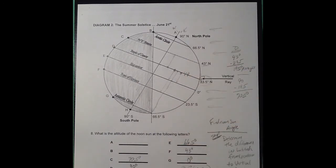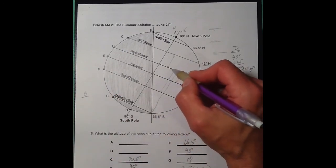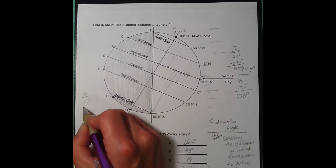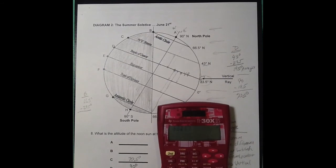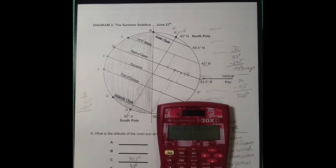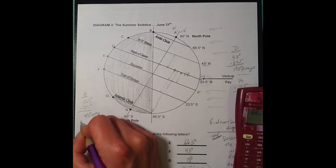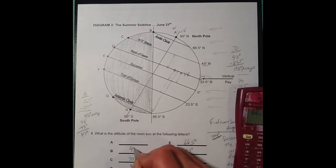The Arctic Circle is at 66.5 degrees north. For point B, which is the Arctic Circle, I'm starting at 23.5 degrees north and staying north, going up to 66.5 degrees. I do 66.5 minus 23.5, which gives 43 degrees away from the vertical ray. Then 90 minus 43 degrees gives a 47 degree angle for the Arctic Circle.